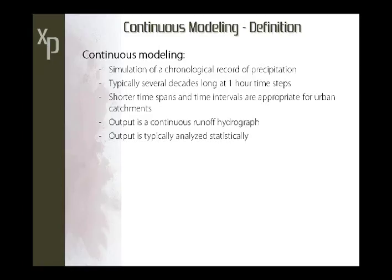The output of a continuous simulation is a continuous chronological record of the runoff hydrograph and possibly other time series — such as infiltration over time, evaporation, and groundwater. The output is typically analyzed statistically because of the nature of the continuous time series. You might ask, what's the peak flow? Well, there's going to be a peak flow for every single storm event within that continuous simulation. So you analyze it statistically, rank events, and give them return periods.